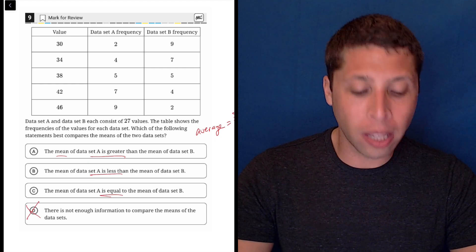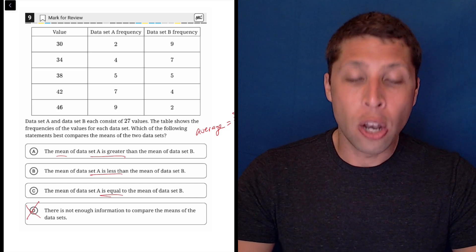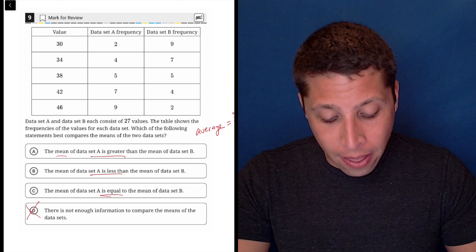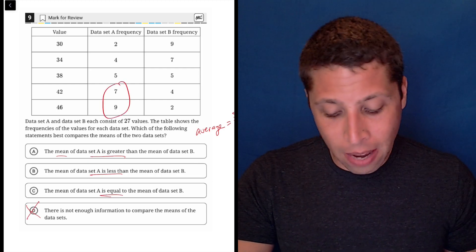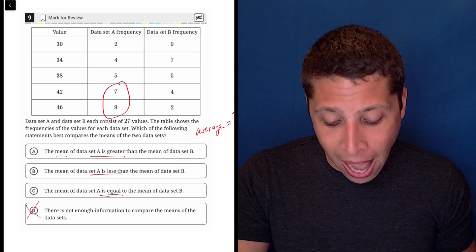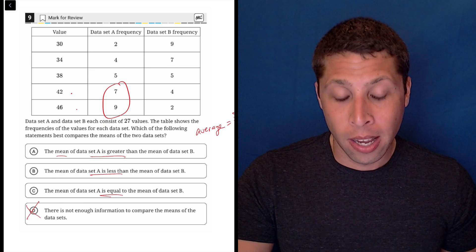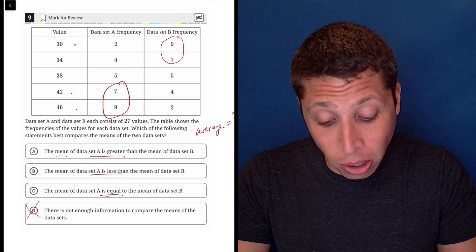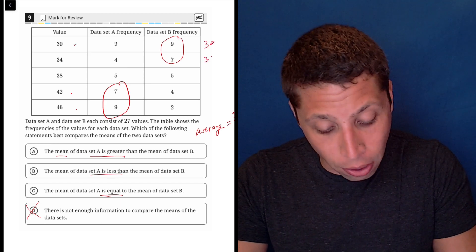but we can look at the difference between A and B to take a little bit of a shortcut. Notice where the frequency numbers lie. For set A, the high frequency values, the seven and the nine, go with the high value numbers, the forty-two and the forty-six. Whereas in set B, the high frequency values are the low values, thirty and thirty-four.